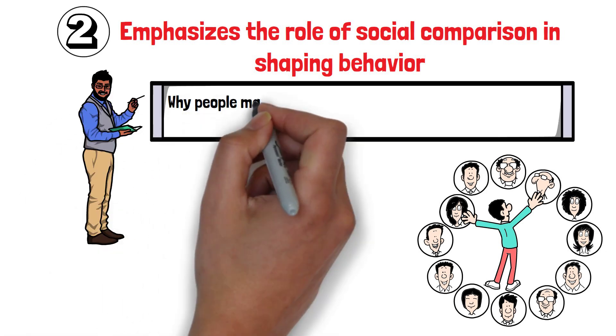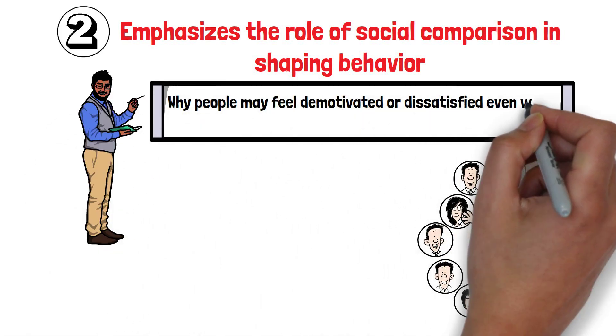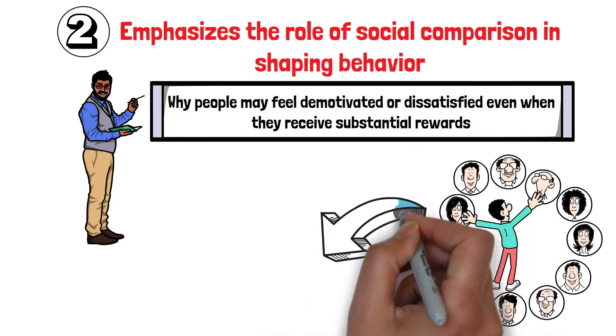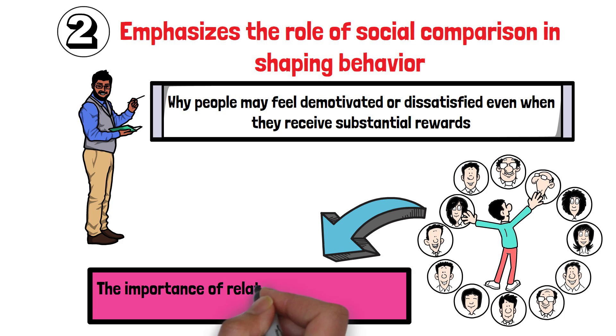This social comparison aspect highlights the importance of relative perceptions over absolute rewards. However, equity theory has its criticisms.